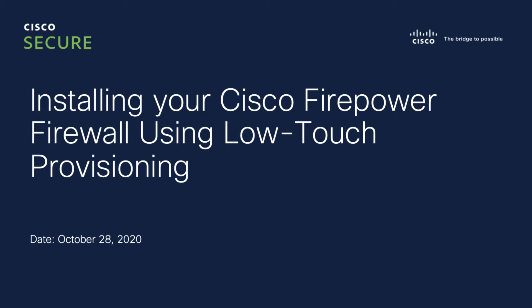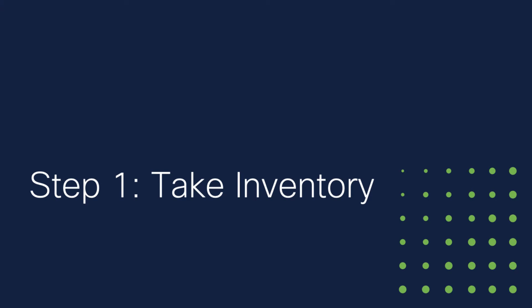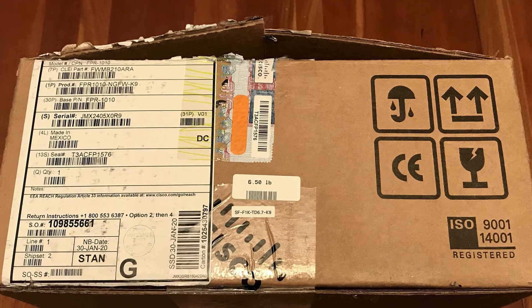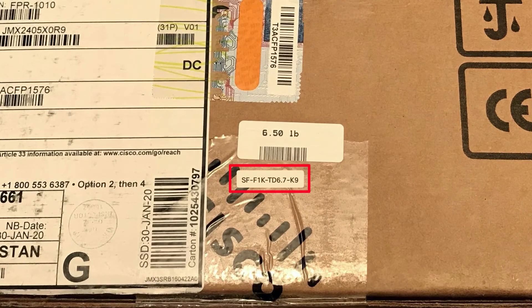After that, your IT department can log in remotely and configure the device. Step 1: Take inventory. Before you connect the cables to the new firewall, you're going to inventory the equipment that came in the box and get oriented to your new device. Keep the cardboard box the device came in. On the box, look for the product identifier sticker. It will confirm for you that Firepower Threat Defense Software version 6.7 is installed. This software is required to deploy your device using low-touch provisioning.